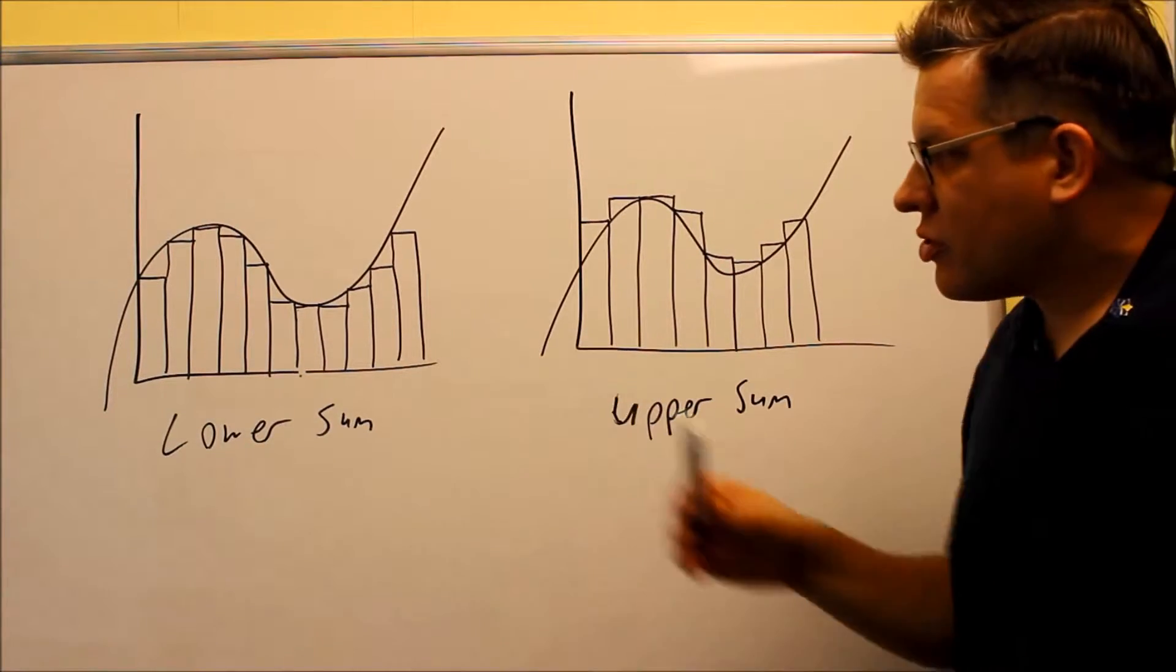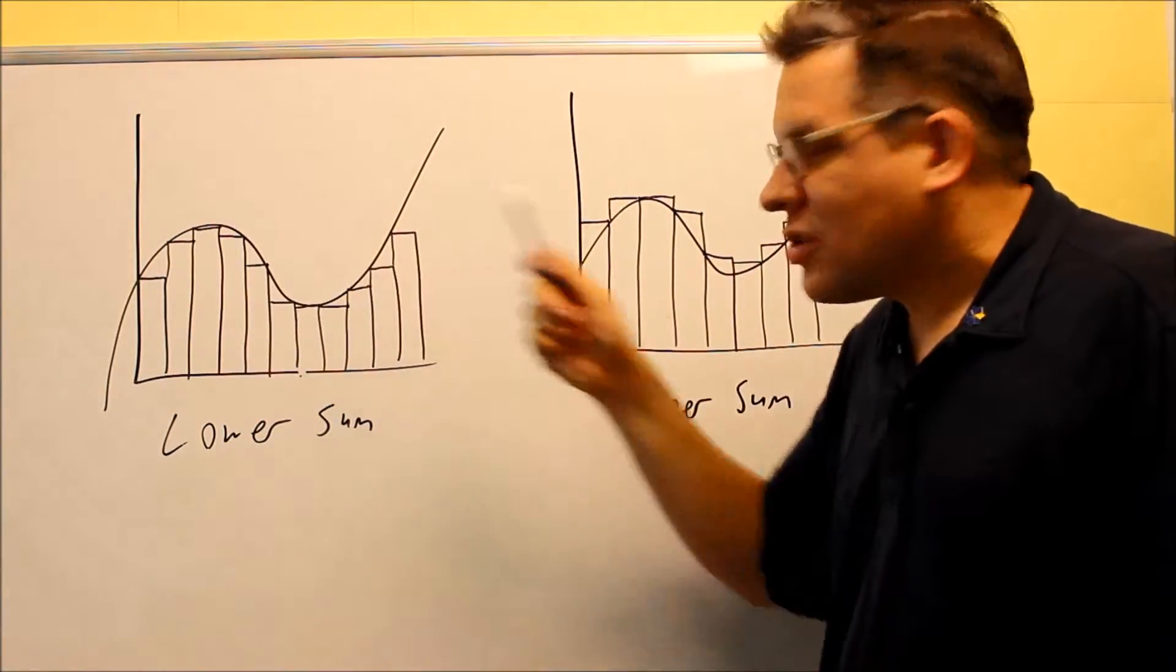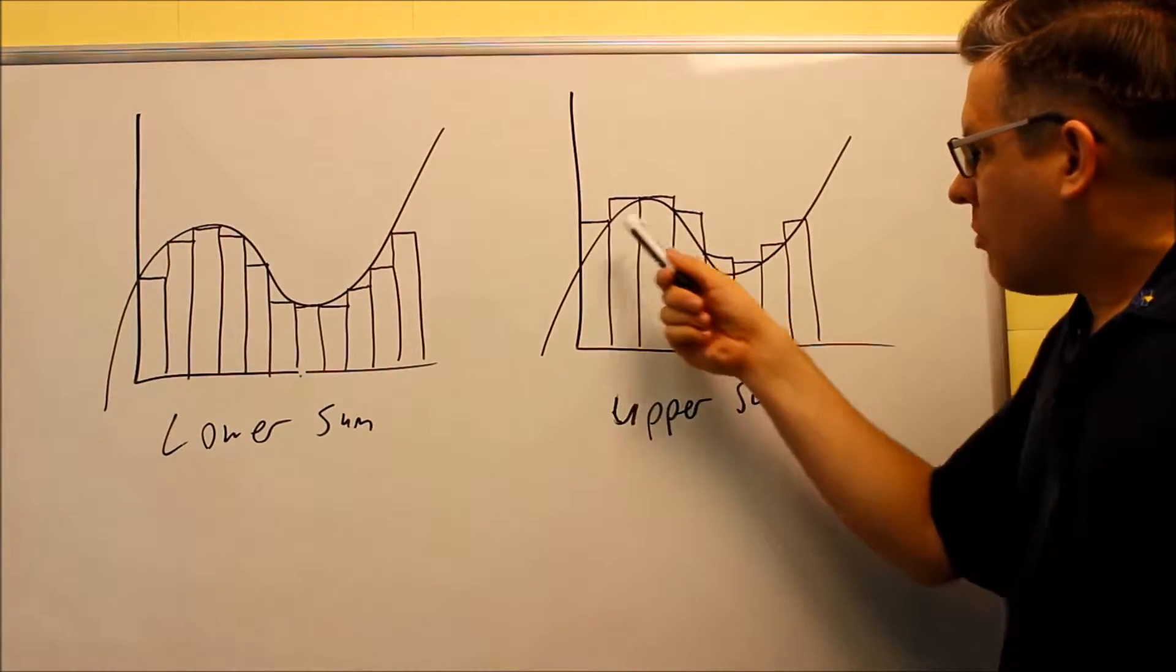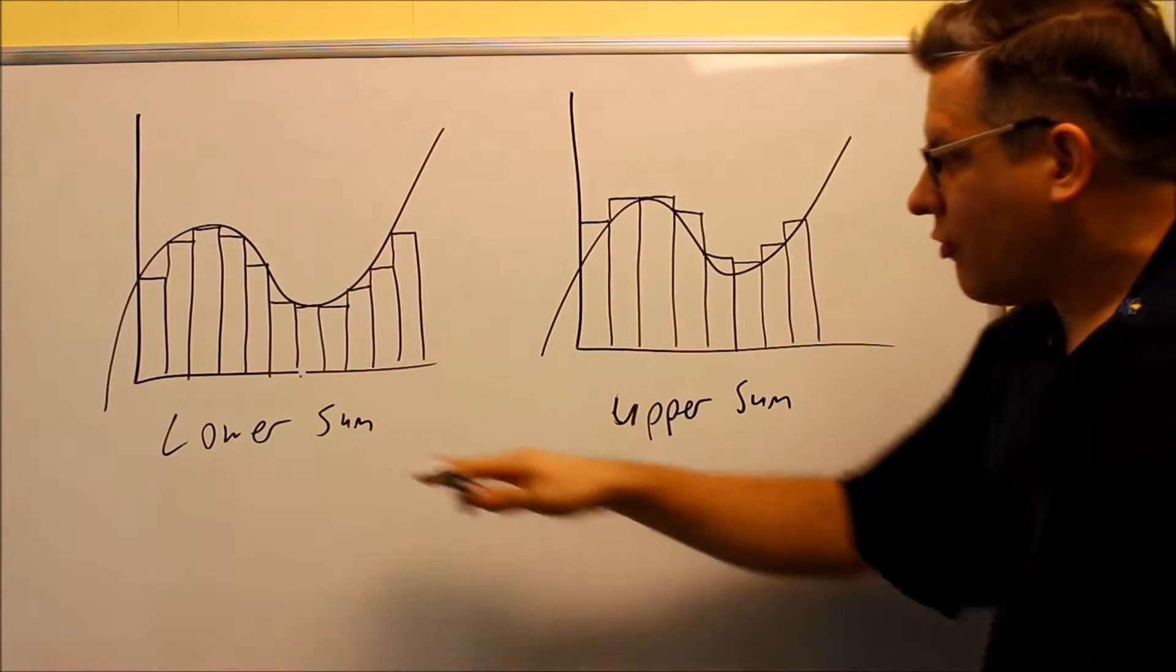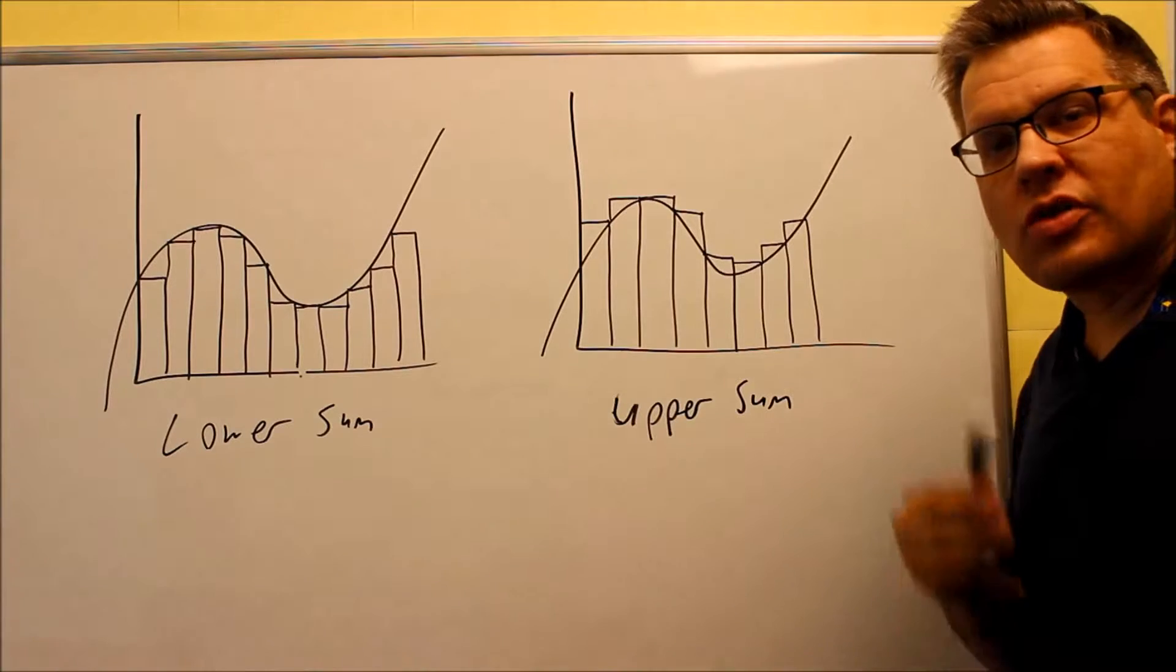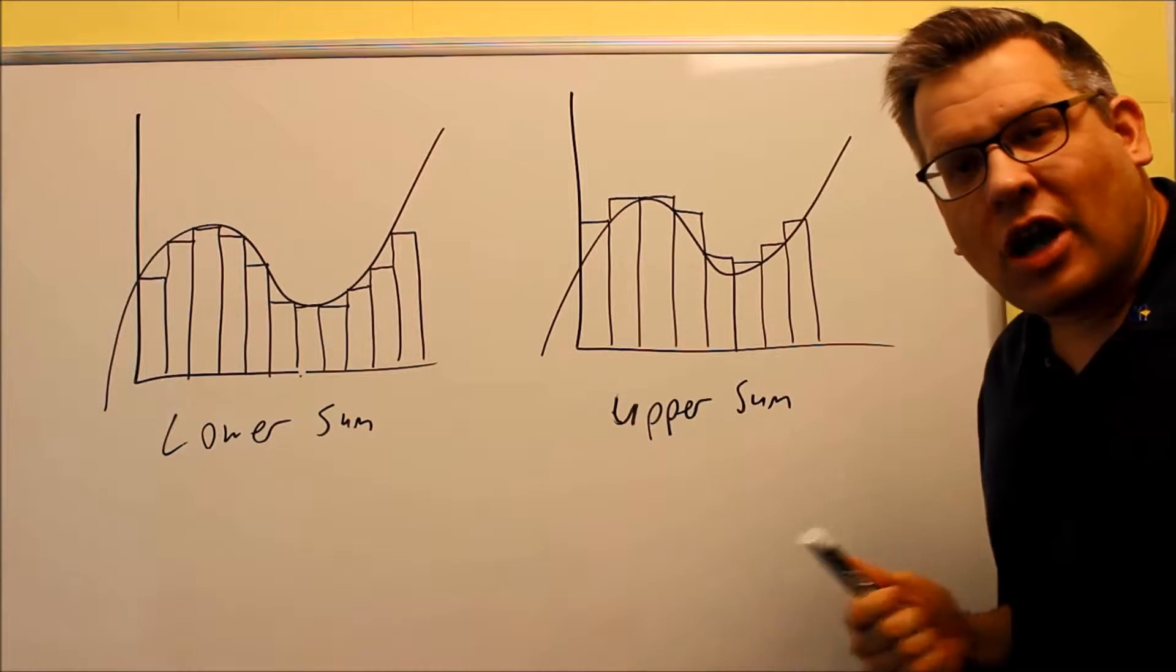So a lower sum kind of underestimates the area. There's some spaces you can see inside there. The upper sum kind of overestimates the area. So we're only going to focus on these two in this section. Now there is a third one that we'll talk about in later sections, and this is referred to as the midpoint.